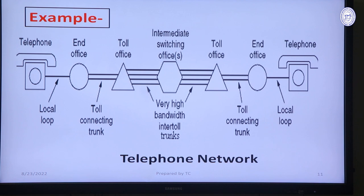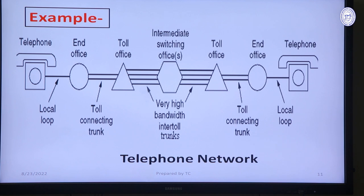One example of a circuit switch network is the telephone network. Telephones are the end users, directly connected to end offices. All end offices are connected to toll offices, and toll offices are connected to intermediate switching offices — all acting as switches. When a sender wants to communicate, they first dial a number to create a connection (setup phase), then communicate (data transfer phase), and when done, cut the line (teardown phase).